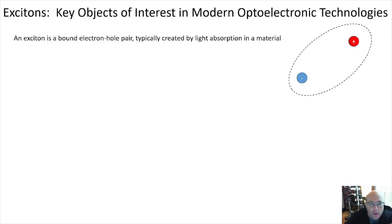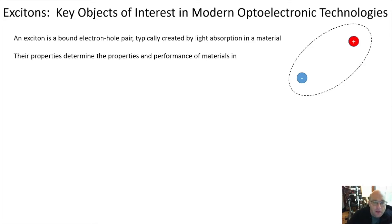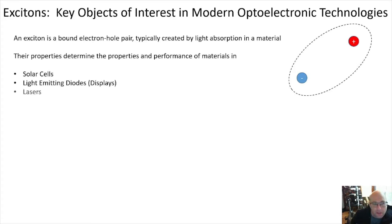I want to start by explaining what an exciton is. Excitons are really important in any optoelectronic technology. An exciton is a bound electron-hole pair that is usually created by light absorption. When you shine light on a material you make excited states — you take an electron from the ground state, move it to the excited state, and leave a hole behind where the electron used to be. These two charged objects have a Coulomb interaction with one another, and we talk about them together as an exciton. The properties of excitons are often important in determining the performance of materials in solar cells, light emitting diodes like in displays, lasers, and photoconductors.